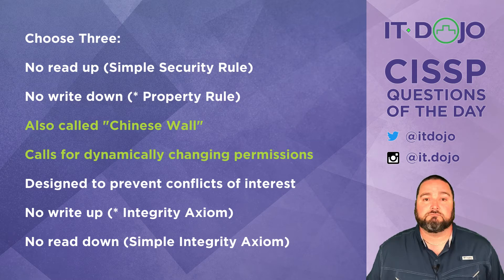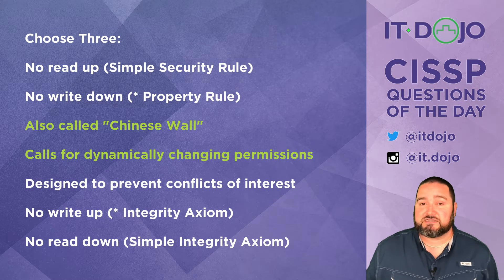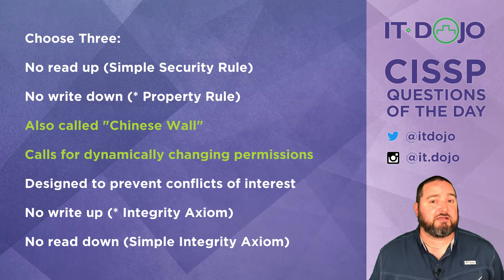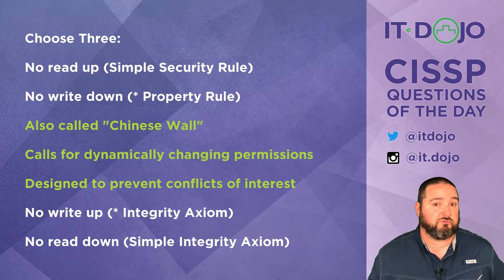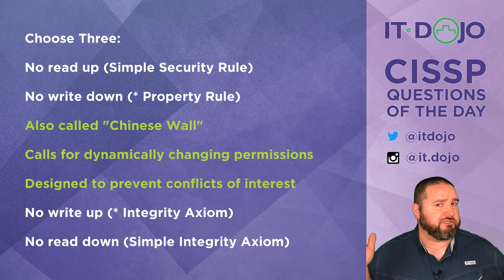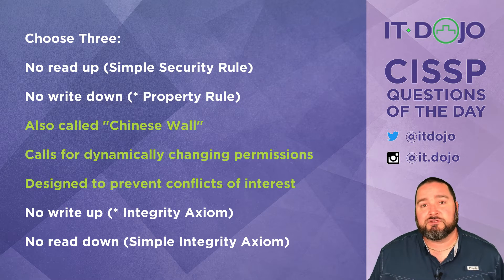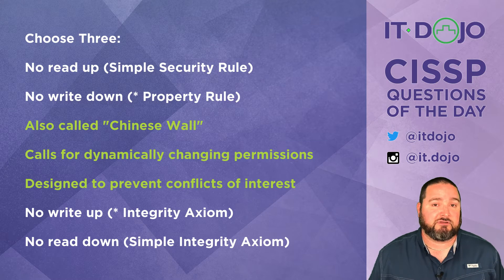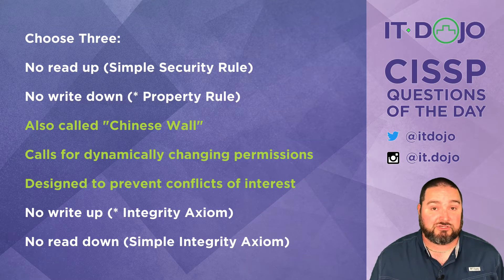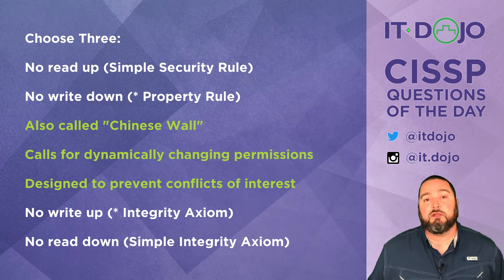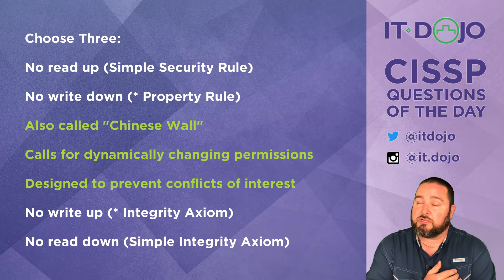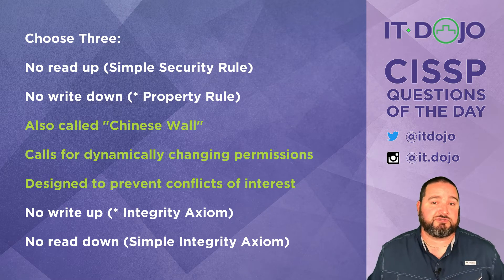The next answer choice says it is designed to prevent conflicts of interest, and this is also true. This is one of the key selling points of the Chinese Wall — it allows you to have conflict of interest prevention, avoidance, or at the very least mitigation in an environment. The last two answer choices are actually associated with the BIBA model.